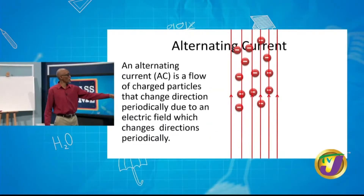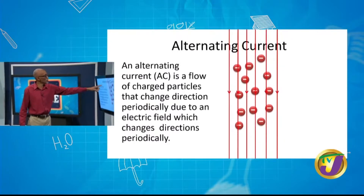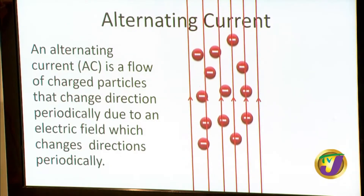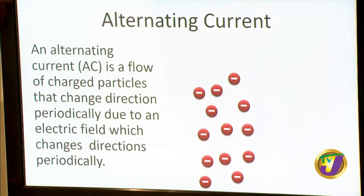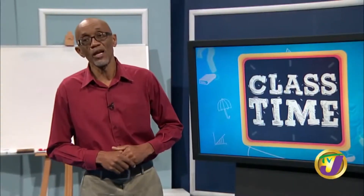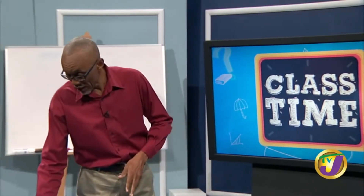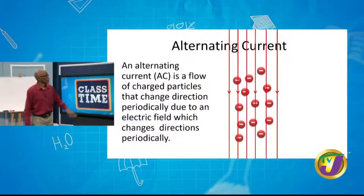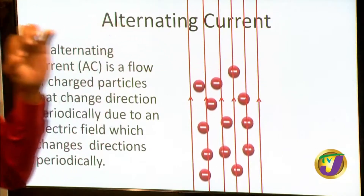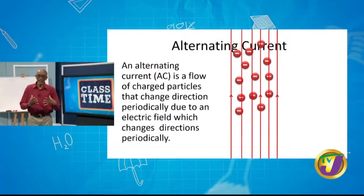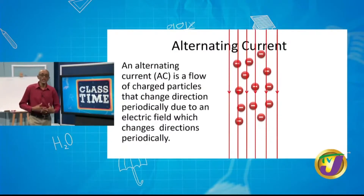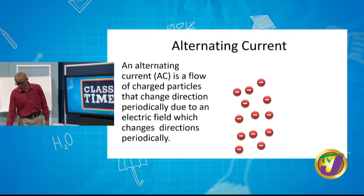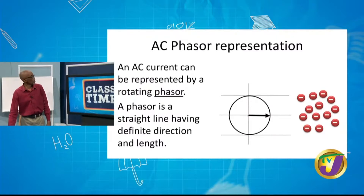With an alternating current, as the field changes direction, the charged particles go up, then the field changes to the opposite direction, and the charged particles go down, and so on. We can recall from the last class that the field is down, but the charges are negative and move opposite to the field. Negative charges move in the opposite direction to the electric field, and so this is consistent with what we have done before.